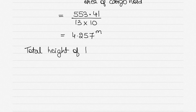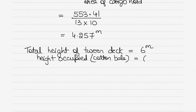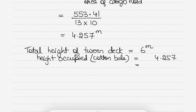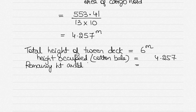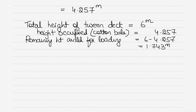Total height of the twin deck is 6 metres. Height occupied by cotton bales is 4.257 metres. Therefore, remaining height available for loading = 6 − 4.257 = 1.743 metres. Write it clearly in the exam so your examiner can follow exactly what you are doing.